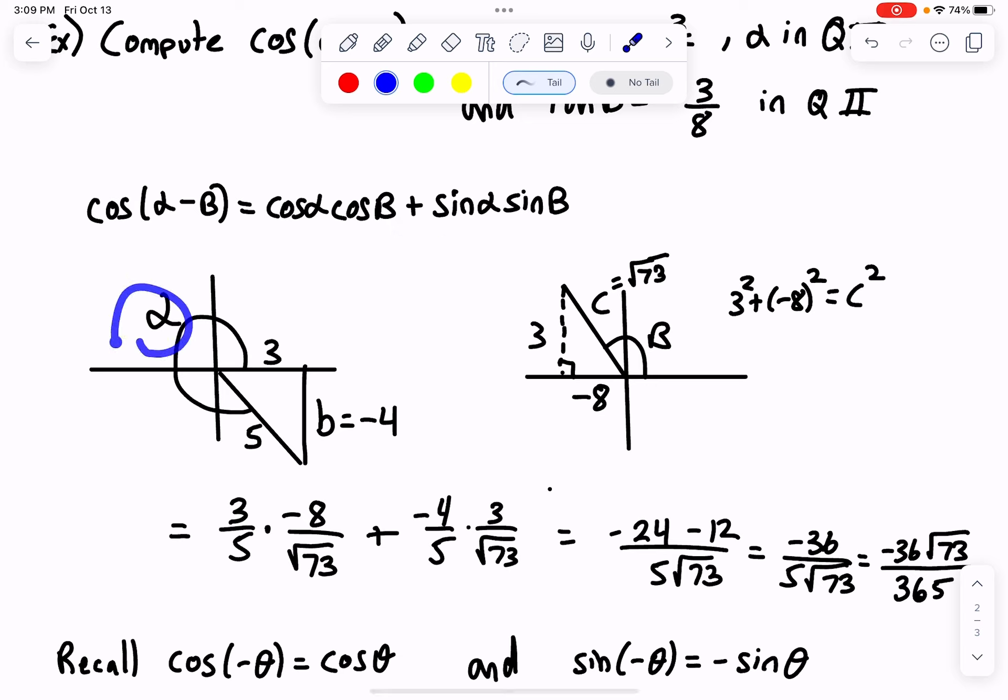sine alpha. Sine alpha is opposite over hypotenuse, negative four-fifths. And sine of beta is the opposite, three, over the hypotenuse, square root of 73.